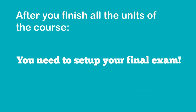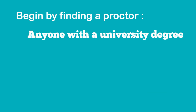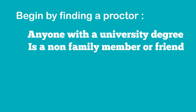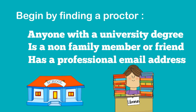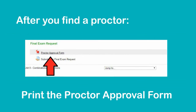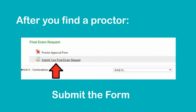After you finish all the units of your course, you need to set up your final exam. Begin by finding a proctor. Your proctor can be anyone with a university degree who is a non-family member or friend that has a professional email address. Most students set up their final exam at their current school or local library. After you find a proctor, you need to print the proctor approval form, have it signed, and submit the form for approval.